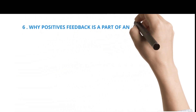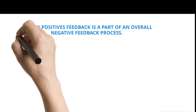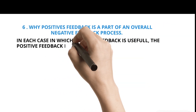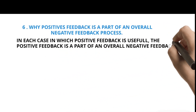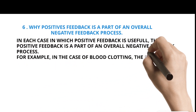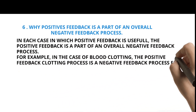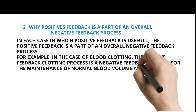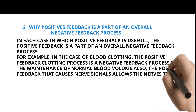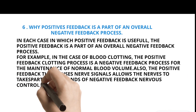Why Positive Feedback is a Part of an Overall Negative Feedback Process: In each case in which positive feedback is useful, the positive feedback is a part of an overall negative feedback process. For example, in the case of blood clotting, the positive feedback clotting process is a negative feedback process for the maintenance of normal blood volume. Also, the positive feedback that causes nerve signals allows the nerves to participate in thousands of negative feedback nervous control systems.